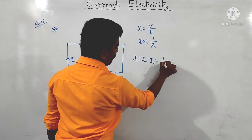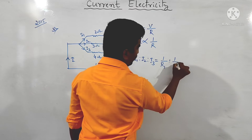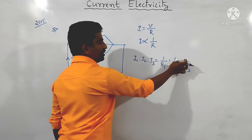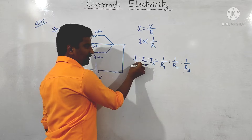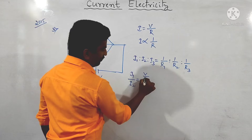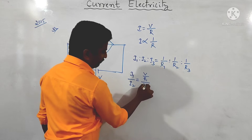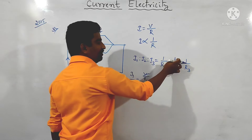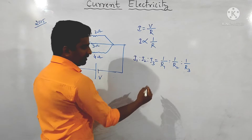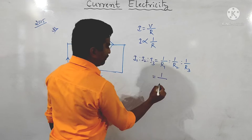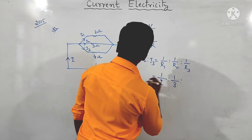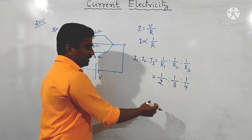The ratio I1 : I2 : I3 is equal to 1/R1 : 1/R2 : 1/R3. Here R1 is 2 ohm, R2 is 3 ohm, and R3 is 4 ohm.